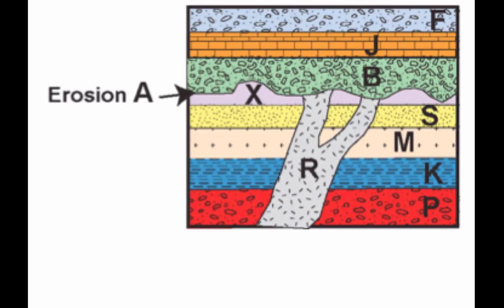We're going to take a look at a couple more examples. Pause the video and try to figure out which ones are older and which ones are younger. The order is: F, J, B, A — which is an unconformity, that wavy line, showing there was some erosion going on. Then R comes next, then X, S, M, K, P. Most of that's pretty straightforward due to superposition. F, J, and B we figure out due to superposition, and A is also kind of superposition — it's a crosscut but goes horizontally, so we can almost treat it like superposition.